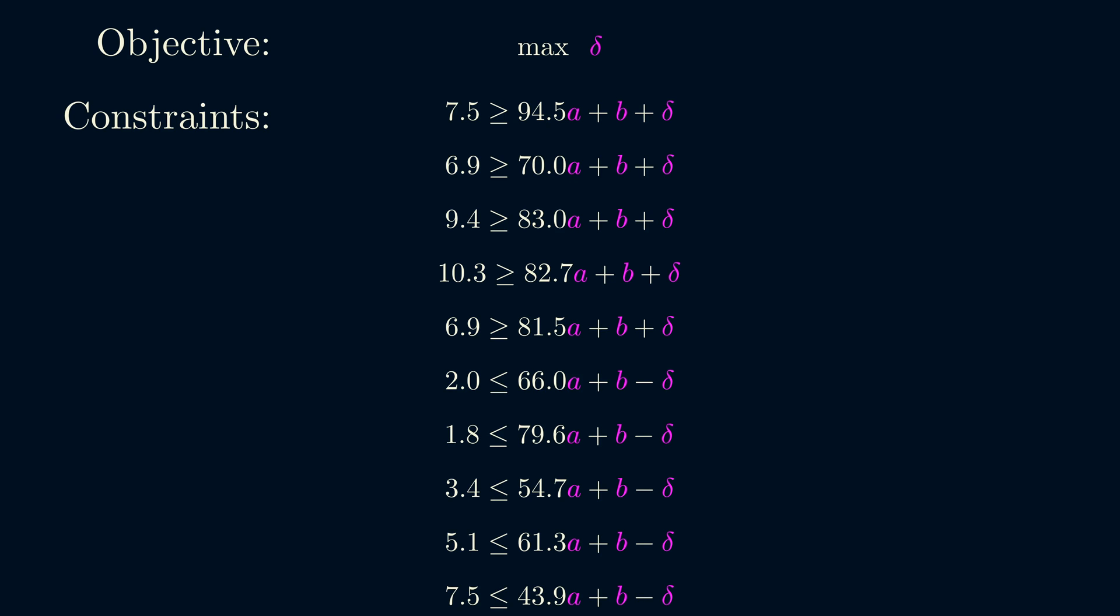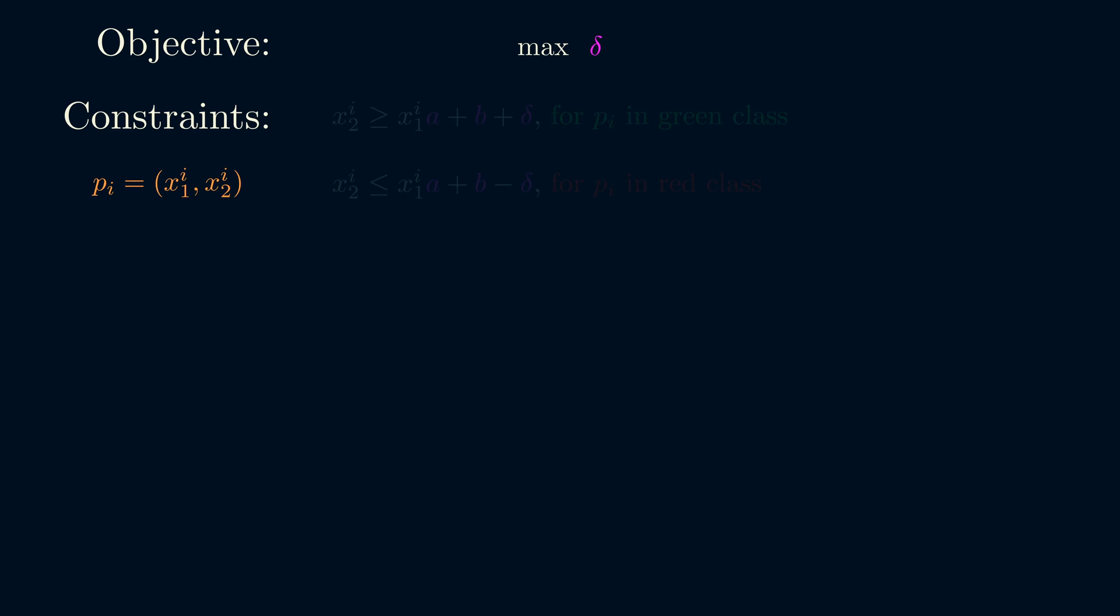Let's, however, simplify the notation a bit first. If PI is a point with coordinates x1i and x2i, then we can write the constraints succinctly like this.